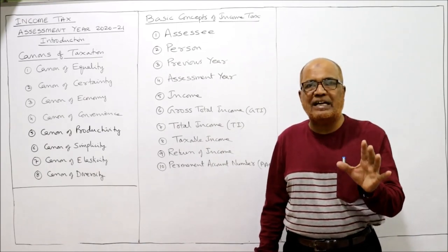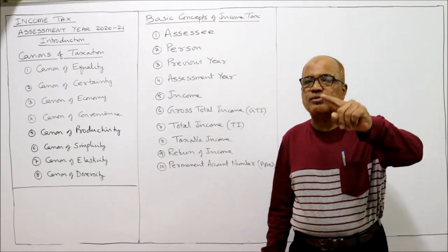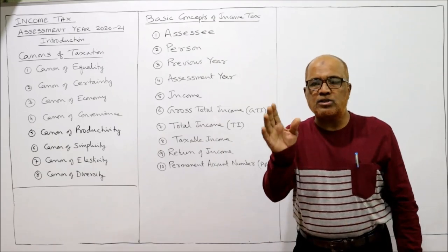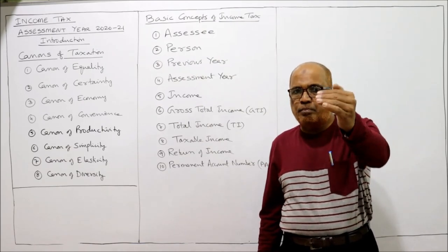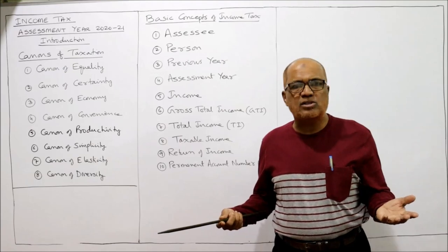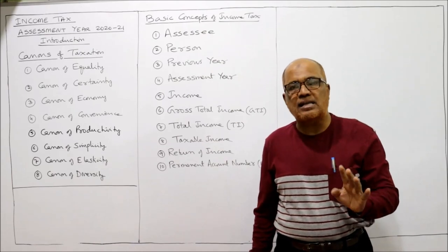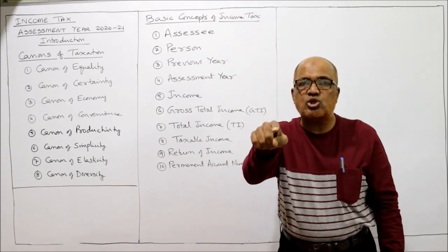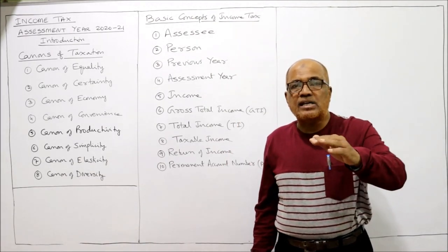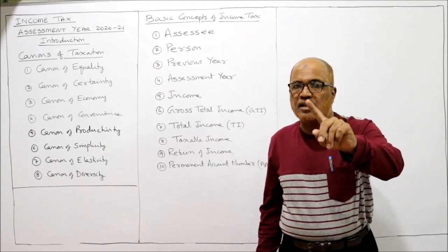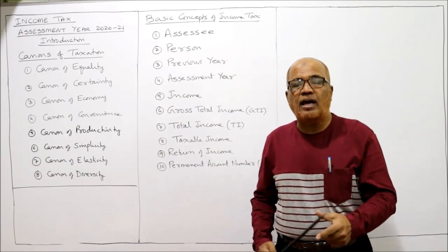An assessee also includes a person against whom income tax proceedings have been started. Normally a person is liable to pay tax if his income is more than the basic exemption limit. For the current assessment year the basic exemption limit is 2,50,000 rupees. If a person's income is below 2,50,000, there is no need to pay tax — he is not an assessee. If his income exceeds 2,50,000, he is an assessee and liable to pay tax.